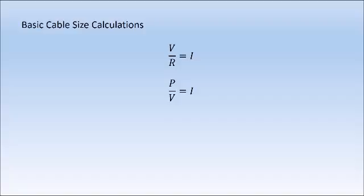Current carrying capacity is determined usually by the size of the cable, but also the type of insulation around the cable itself. You've got PVC insulations that range from about the 60-degree mark up to 120 degrees. So a 60-degree PVC insulation will have a lower current carrying capacity than a 120-degree PVC insulation.